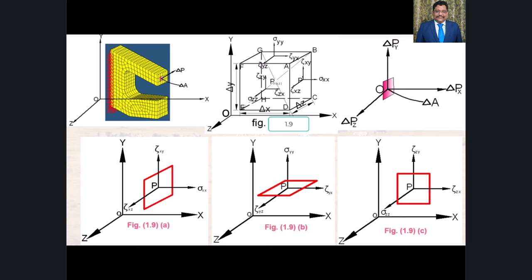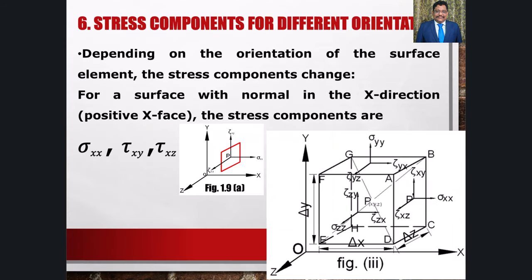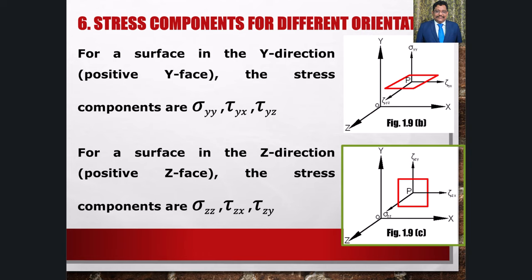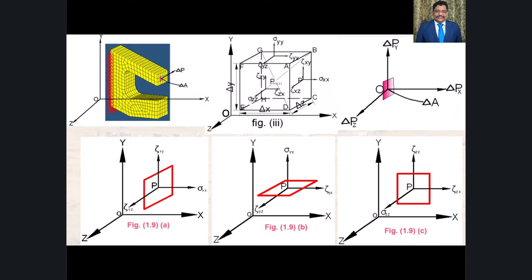Fig. 1.9a में element का outer normal positive x direction में होता है और इसलिए ये positive x face है जिसमें stress के components sigma(xx), tau(xy) और tau(xz) होते हैं। ये components axes की positive directions की ओर इशारा कर रहे हैं और इसलिए हमारे convention के अनुसार ये positive होते हैं। इसी तरह fig 1.9b में positive y face पर stress components sigma(yy), tau(yx), tau(yz) दिखाए गए हैं और fig 1.9c में positive z face पर stress components sigma(zz), tau(zx), tau(zy) दिखाए गए हैं।